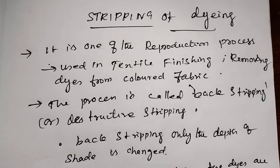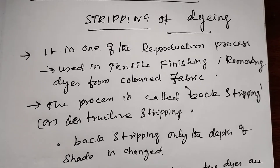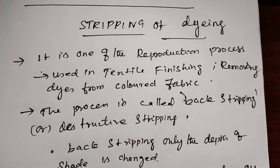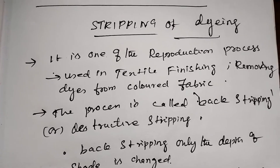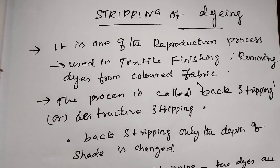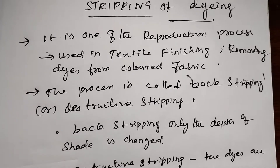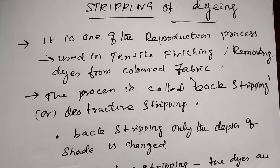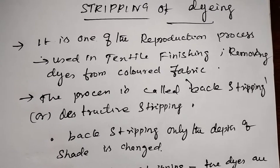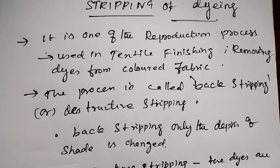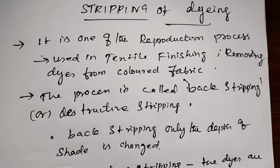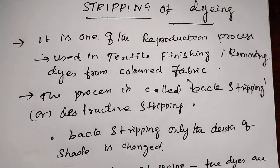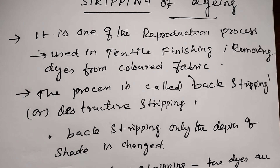Hello students. What are you talking about? Stripping of dyeing. Why are we using this method of dyeing? This is one of the reproducing processes. It is used in textile finishing, or removing dyeing from colored fabric.